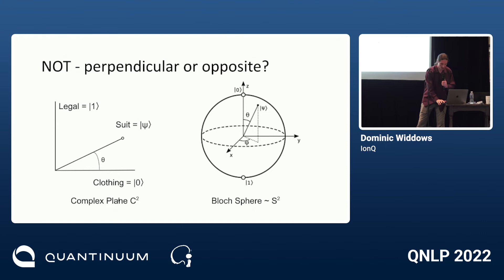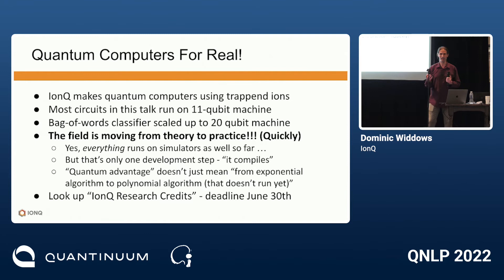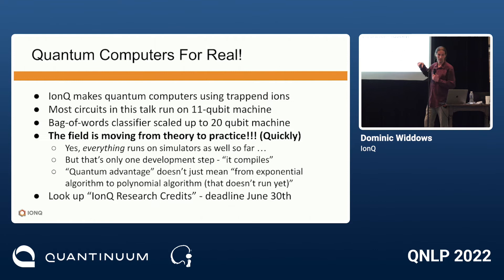Why are people interested right now? The real reason: we now have quantum computers for real, and that's made the last couple of years an exciting uptick. This talk is principally about new things we're doing on quantum computers. IonQ makes quantum computers using trapped ions. Most circuits in this talk run on an 11-qubit machine, though some of the bag-of-words classifier work was scaled up to 20 qubits for the first time last week. The field is moving from theory to practice very quickly.